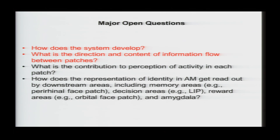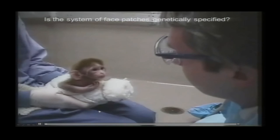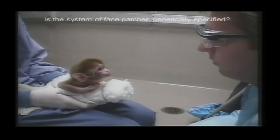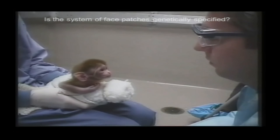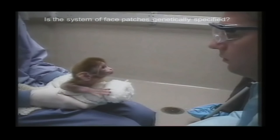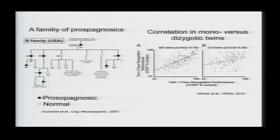So, first, how does this system develop? So, as you probably all know, babies and also monkey babies have a preference for looking at faces from the moment that they're born, you know, even if they've never seen a face before. And this is a movie of a one-day-old macaque monkey. And that suggests that there's a strong genetic component to specifying this specialized system for processing faces.